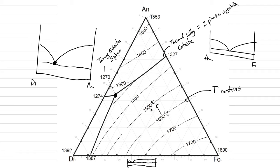My students struggle with a couple of ideas. The first is being in bird's eye view — we're looking down on a surface, and we need to be able to visualize that surface in three dimensions. If you can see that here's the 1400 line, and we go down towards the thermal valley as we're headed towards the cotectic, then we continue to roll downhill. So let's say we had a magma right here at 1500 degrees C.